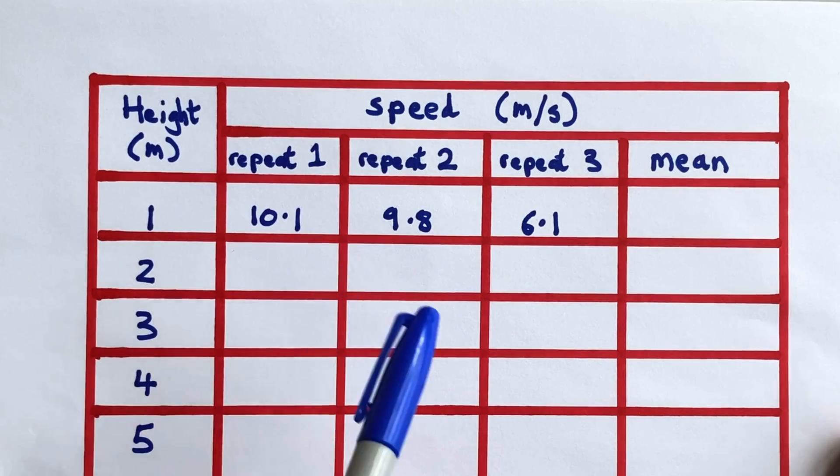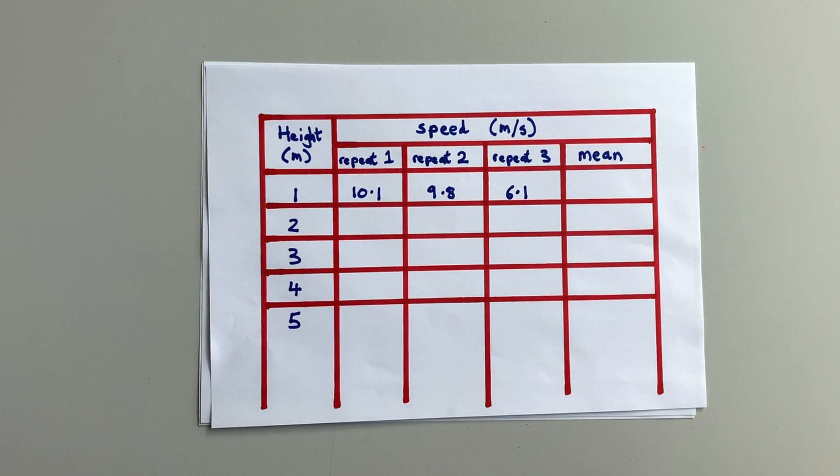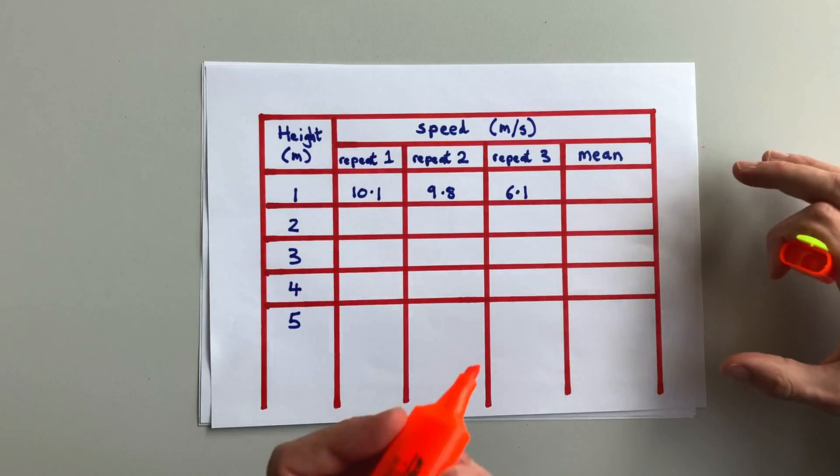In this first example, 9.8 and 10.1 are close together, and 6.1 is quite different. That makes it an anomaly.